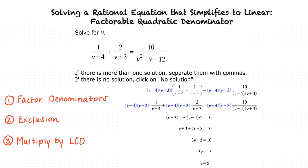After multiplying both sides of the equation by the least common denominator, we combine like terms and simplify. This results in v equals 5.